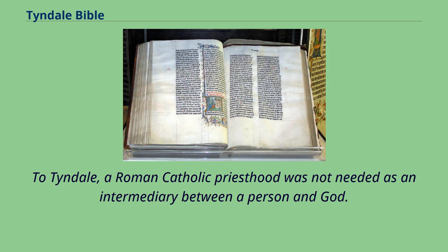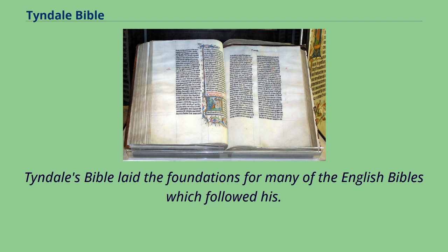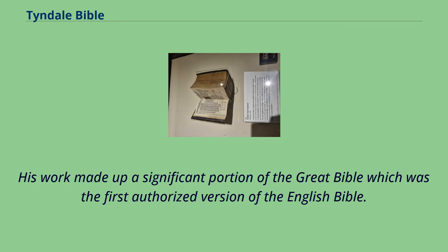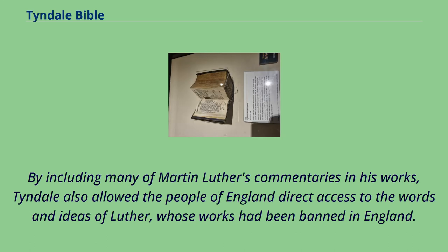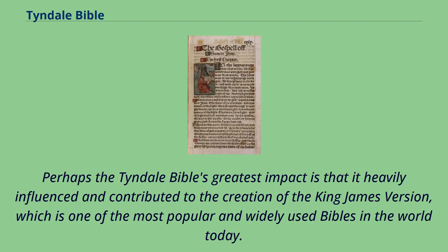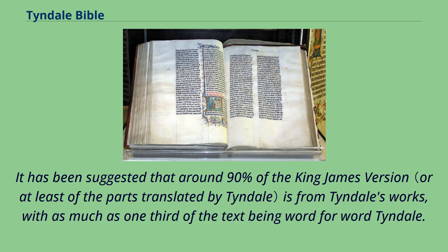Tyndale's Bible laid the foundations for many of the English Bibles which followed. His work made up a significant portion of the Great Bible, which was the first authorized version of the English Bible. The Tyndale Bible also played a key role in spreading Reformation ideas to England, which had been reluctant to embrace the movement. By including many of Martin Luther's commentaries in his works, Tyndale also allowed the people of England direct access to the words and ideas of Luther, whose works had been banned in England. Perhaps the Tyndale Bible's greatest impact is that it heavily influenced the creation of the King James Version — it has been suggested that around 90% of the King James Version is from Tyndale's works, with as much as one-third of the text being word-for-word Tyndale.